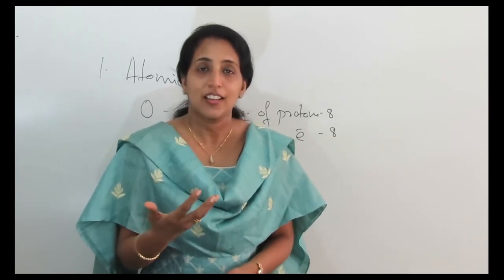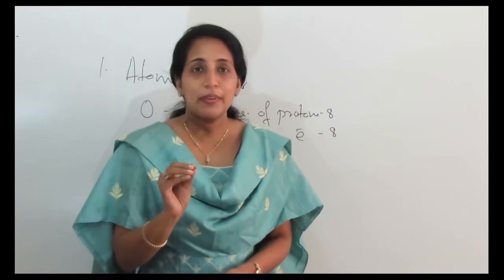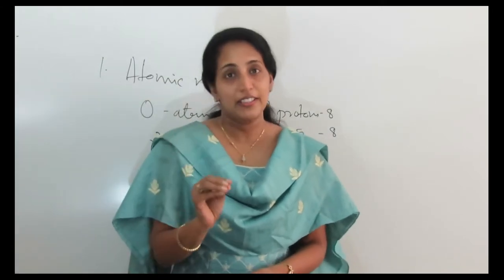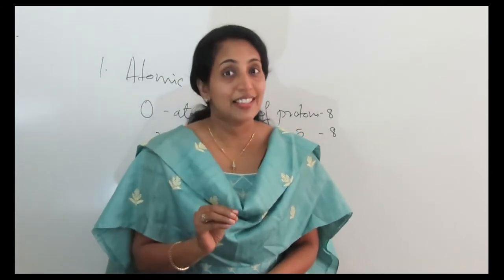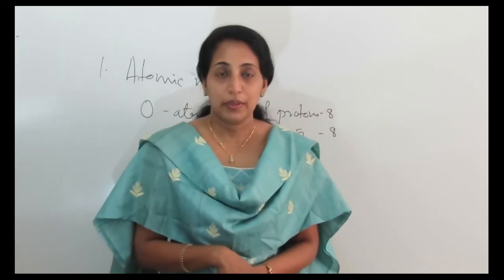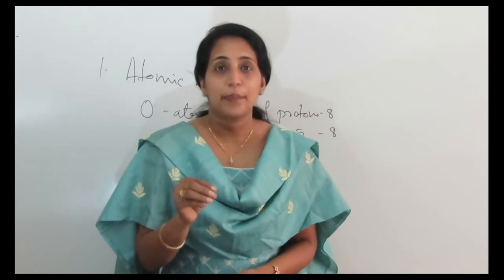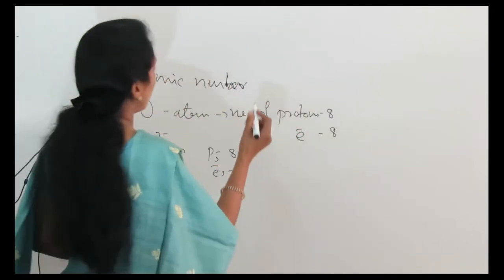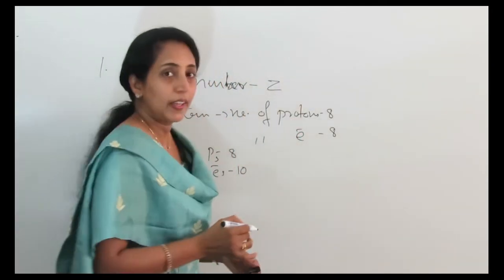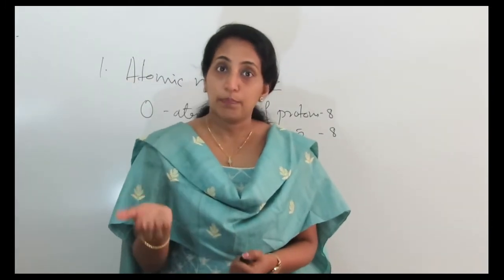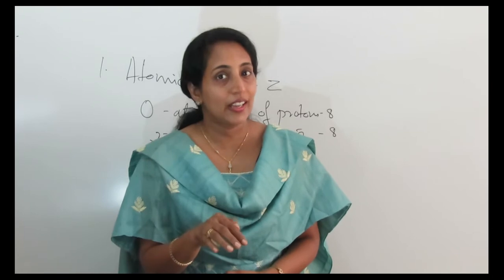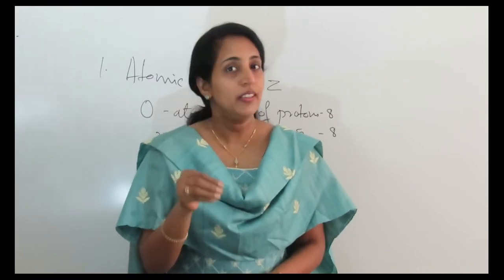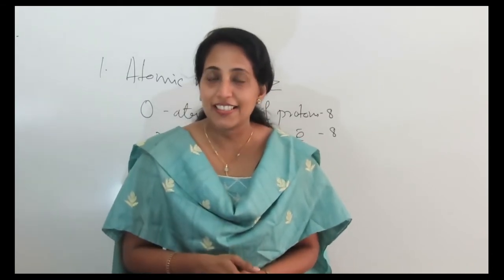Now, the atomic number determines the identity of an element. If you know the identity of an element, the atomic number gives a unique value for each element. The atomic number determines the identity of an element and it is represented by the letter Z. Atomic number is the number of protons or number of electrons in a neutral atom.